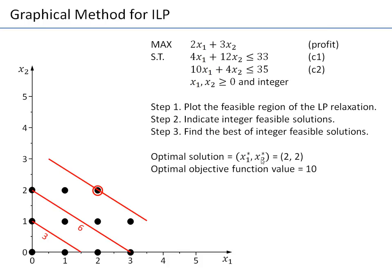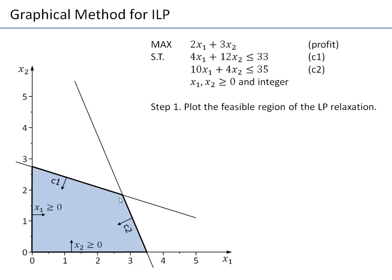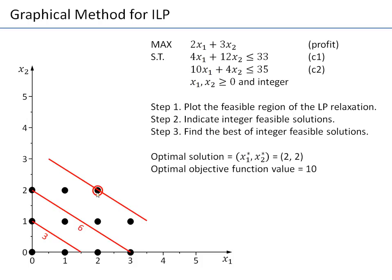The optimal solution is x1 = 2, x2 = 2, giving a total profit of 10. Note that (2,2) was not the optimal solution for the continuous relaxation — the continuous optimum would have been a fractional point like (2-something, 1-something). With the integer constraint, however, (2,2) is optimal.